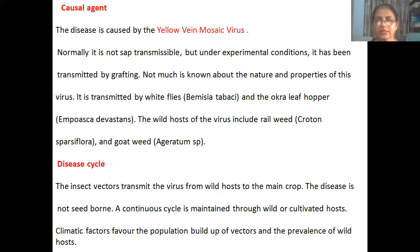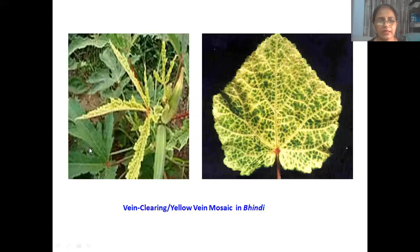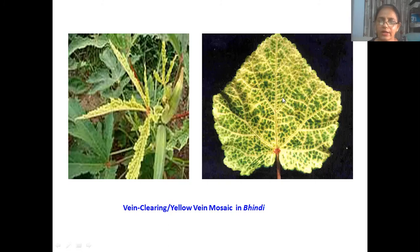The insect vector transmits the virus from wild host to the main crop. The disease is not seed-borne. A continuous cycle is maintained through wild or cultivated hosts. Climatic factors favor the build-up of the vector population and the prevalence of wild hosts. You can see in this picture the fruits and leaves — this leaf shows completely yellow or whitening of the veins.